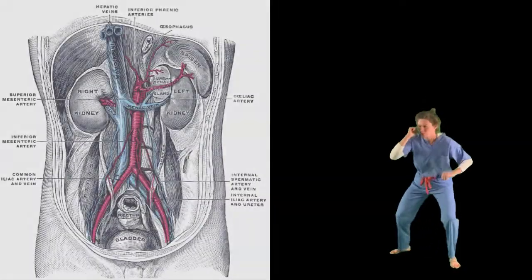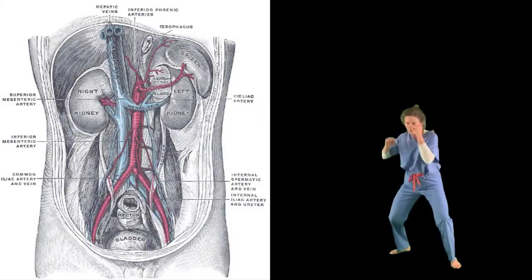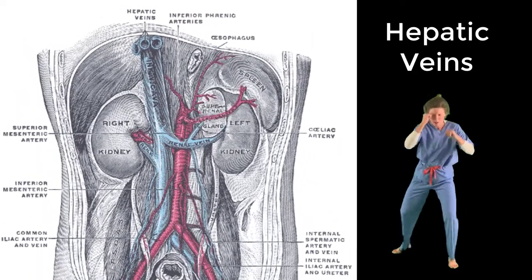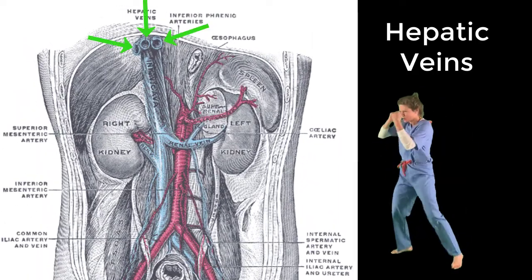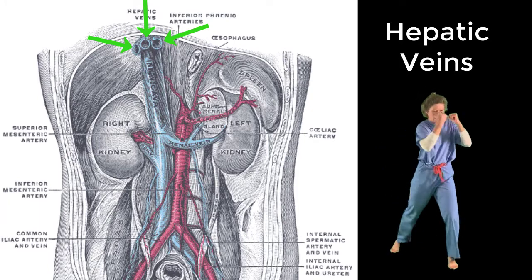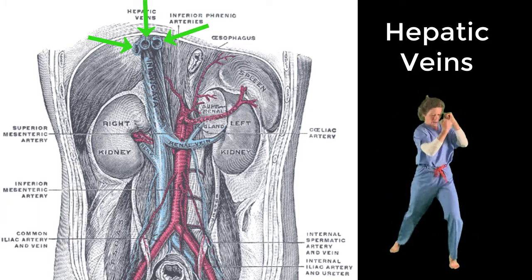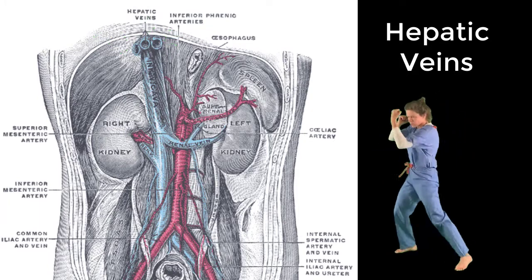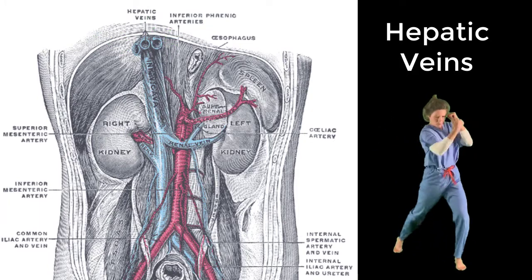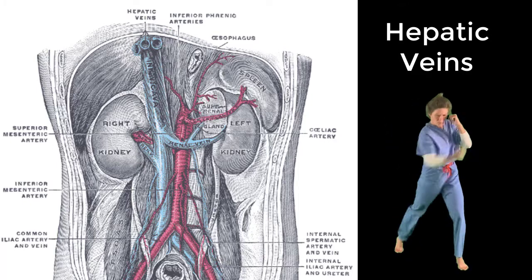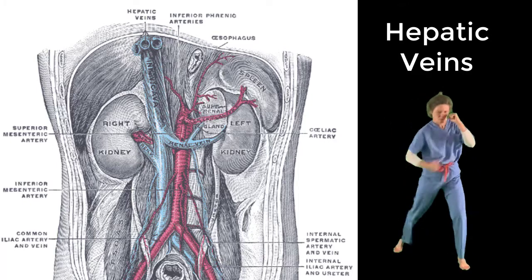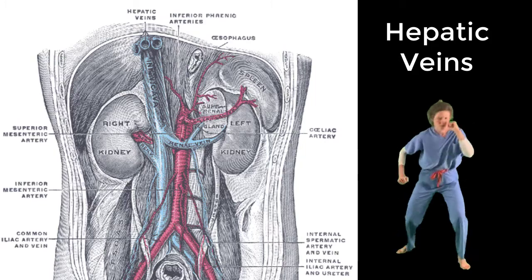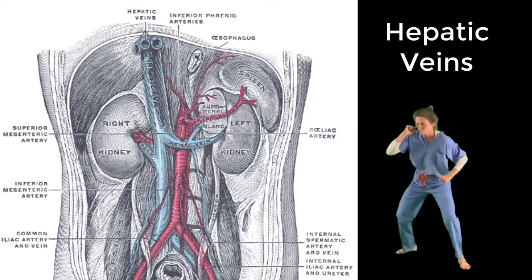And lastly in the caval system, we need to discuss the hepatic veins. These three veins drain blood from the liver into the vena cava. Because these veins drain the liver rather than going to the liver, they are considered to be part of the caval system.